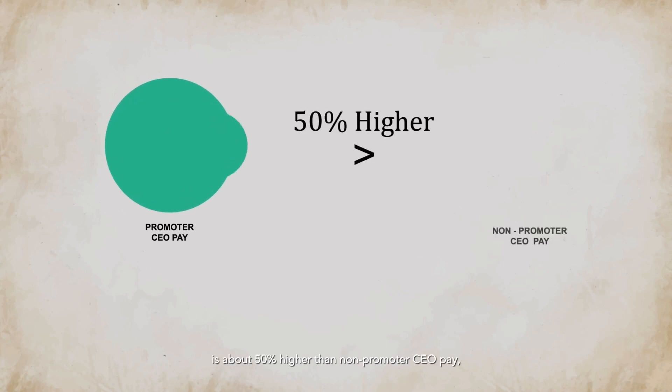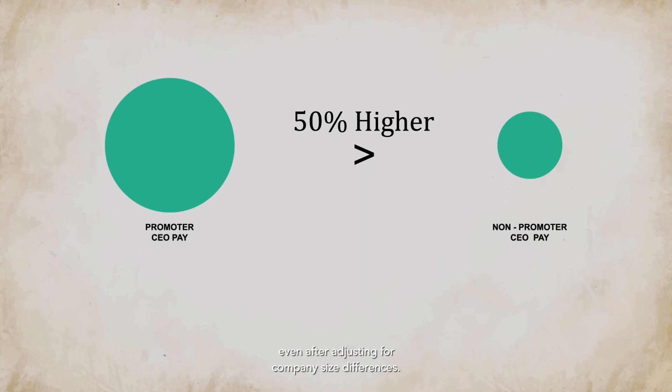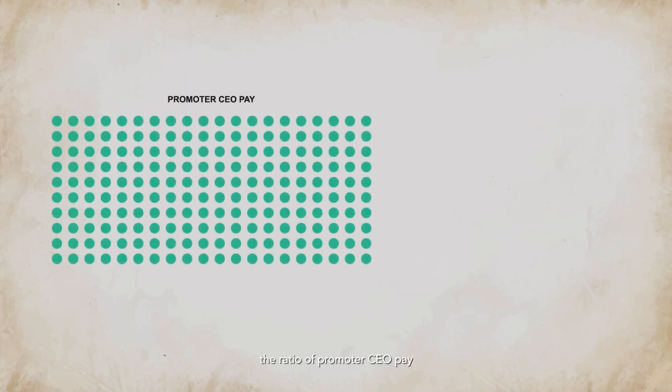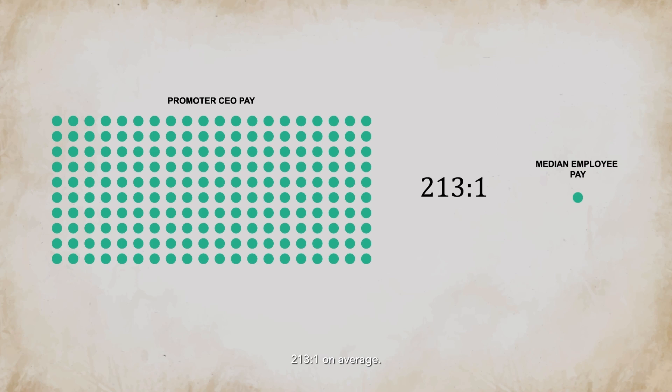Another important board committee is the nomination and remuneration committee. It is responsible for setting the pay of the CEO and other key management personnel. CEO pay has become a sensitive topic in India recently. Our research shows that promoter-CEO pay in India is about 50% higher than non-promoter CEO pay, even after adjusting for company size differences. Moreover, the ratio of promoter-CEO pay to that of the median employee in India is 213:1 on average. The CEO earns 213 times as much as the median employee. There is only one country in the world, the USA, which has a higher ratio.